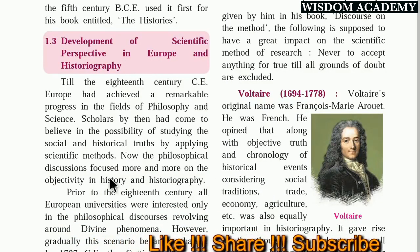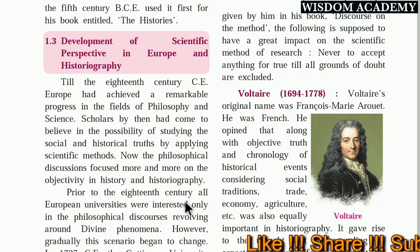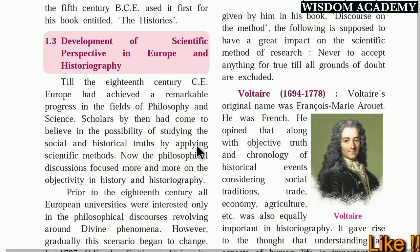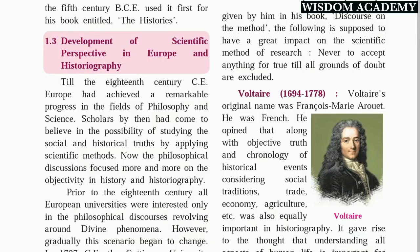Philosophical discussions focused more and more on objectivity in history and historiography. Prior to the 8th century CE, all European universities were interested only in philosophical discourse revolving around divine phenomena — they studied about God and accepted whatever the church said. But over time, common people started studying and questioning the church, just as Newton started thinking scientifically about gravity.